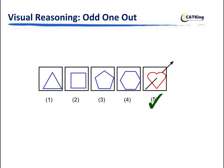So like that, you have to find a relation which exists between the rest of the four images which the fifth one is not able to satisfy. That's what your odd one out question is.